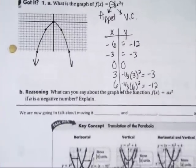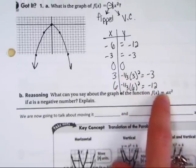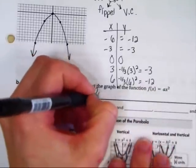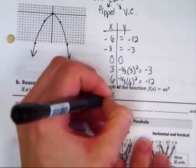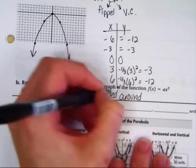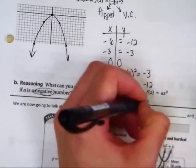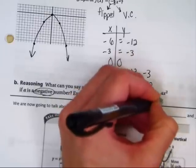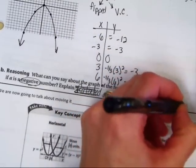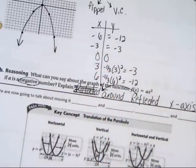Part B. What can you say about the graph f of x equals a of x squared? If A is negative, what you can say about that is that it has been rotated. Let's use our real words. Rotated around. Excuse me, not rotated. Let's reflect it. Reflected around the x-axis. Reflect it around your x-axis.